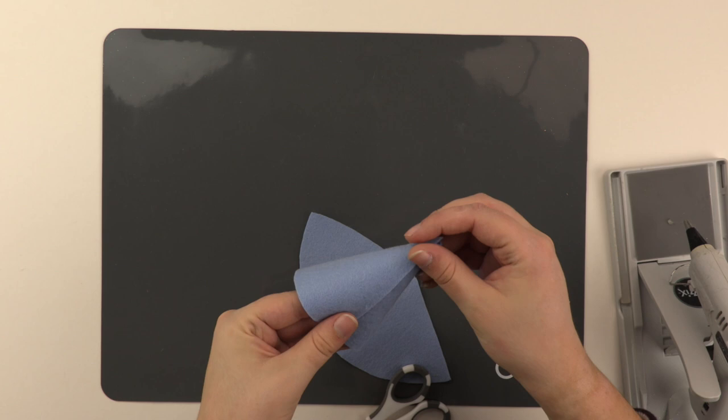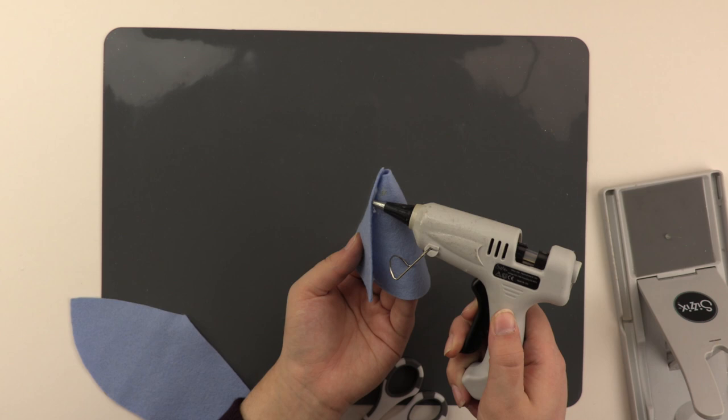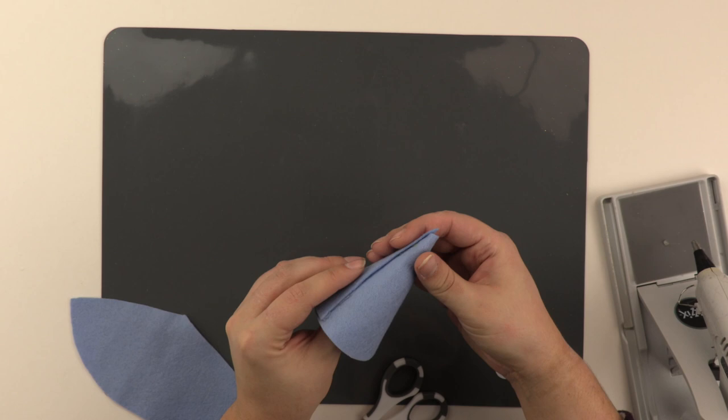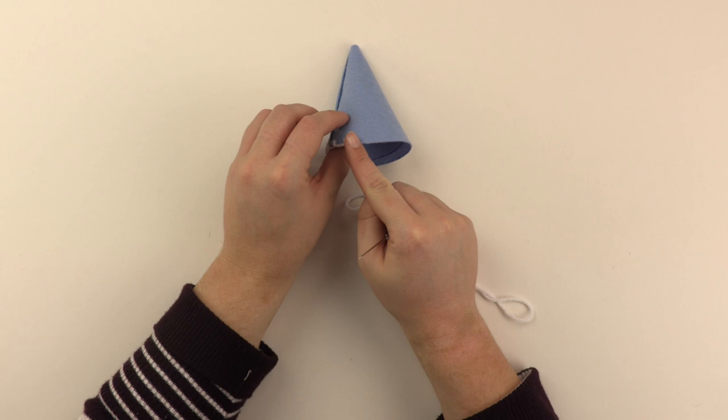So with my glue gun, I'm just going to pop some glue right down the edge to secure. So with the same wool that I used for the pom-pom, I'm just going to do a blanket stitch all the way around.